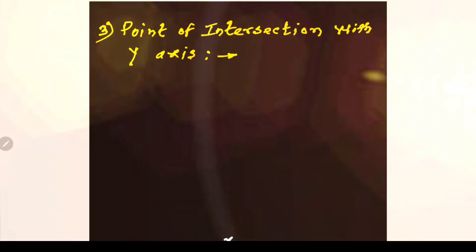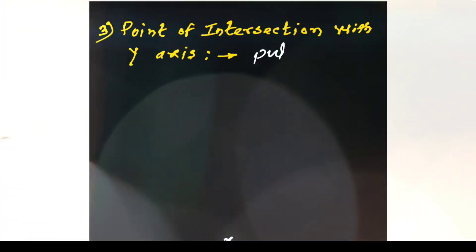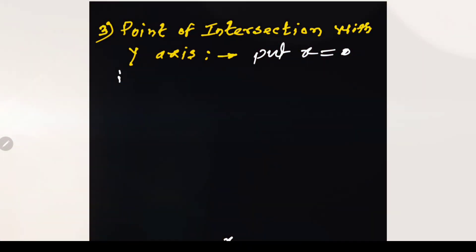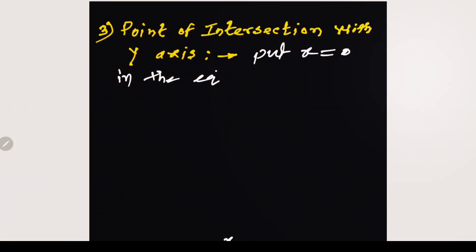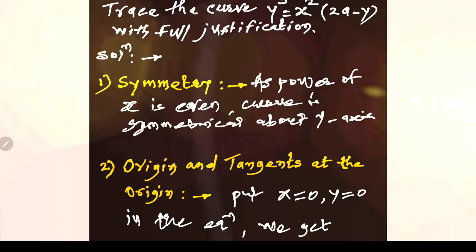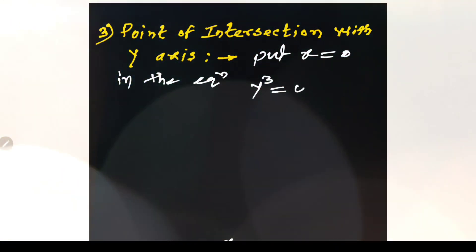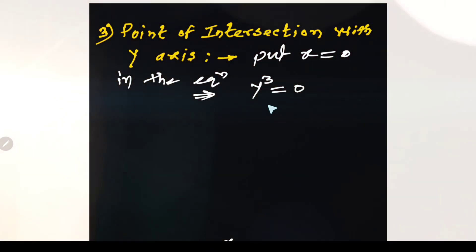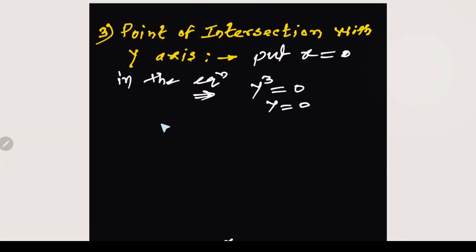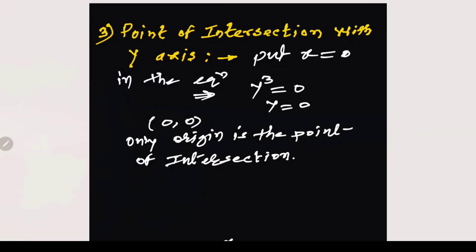The next point is the point of intersection with the y-axis. As the curve is symmetrical about the y-axis, we find the point of intersection with the y-axis by substituting x = 0 in the equation. When we put x = 0, the right-hand side becomes 0, so y³ = 0, meaning y = 0 taking cube root on both sides. Therefore, only the origin is the point of intersection.